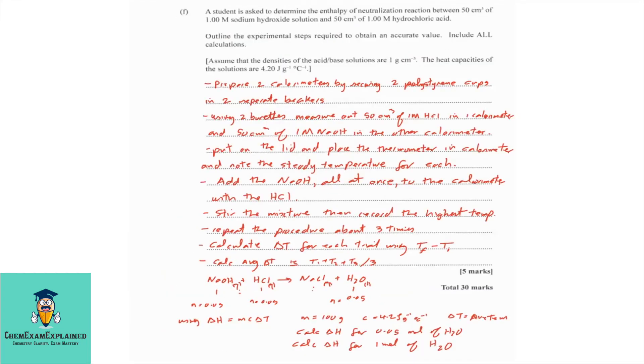Part F. A student is asked to determine the enthalpy of neutralization reaction between 50 cm3 of 1.00 molar sodium hydroxide solution and 50 cm3 of 1.00 molar hydrochloric acid. Outline the experimental steps required to obtain an accurate value. Include all calculations. Assume that the densities of acid-based solutions are 1 gram per cm3. The heat capacities of the solutions are 4.20 joules per gram per degree Celsius.